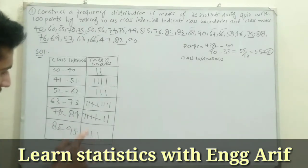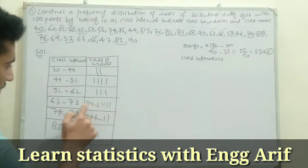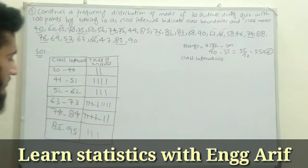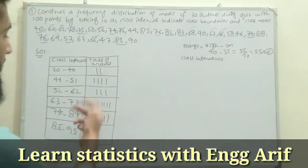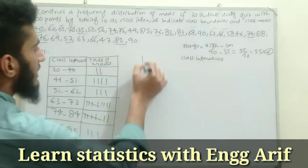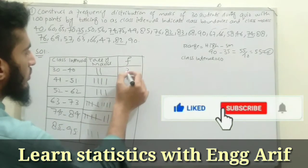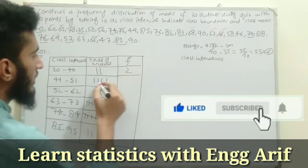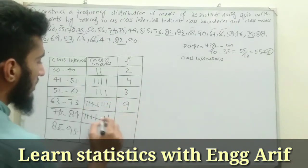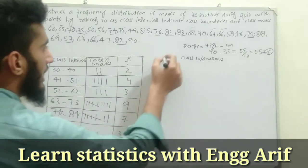Counting all the tally marks: 2 + 4 + 3 + 9 + 7 + 3 = 28, with two values repeated, confirming a total of 30 marks. The frequency column therefore reads: 2, 4, 3, 9, 7, and 3.